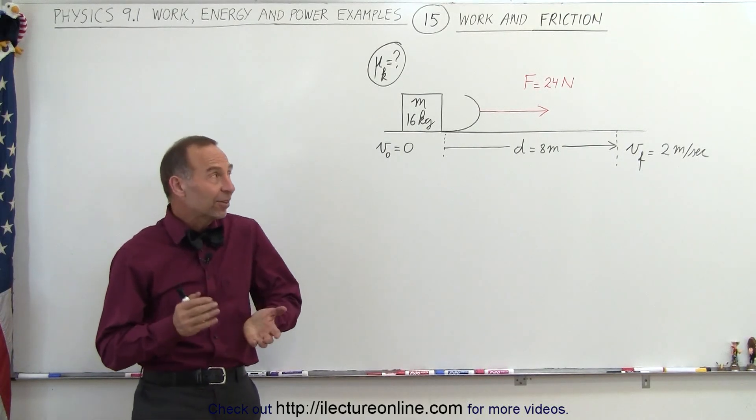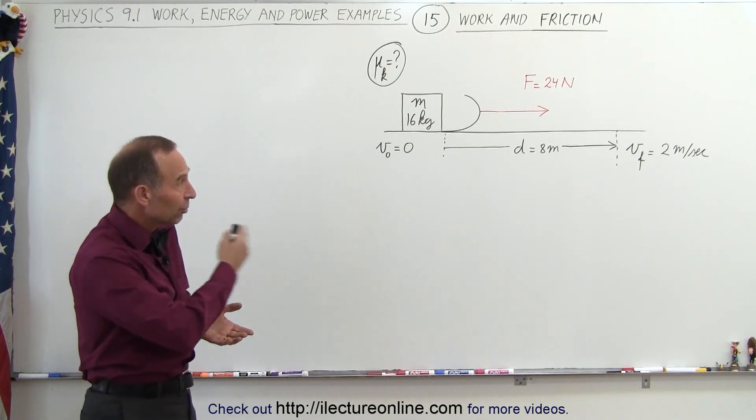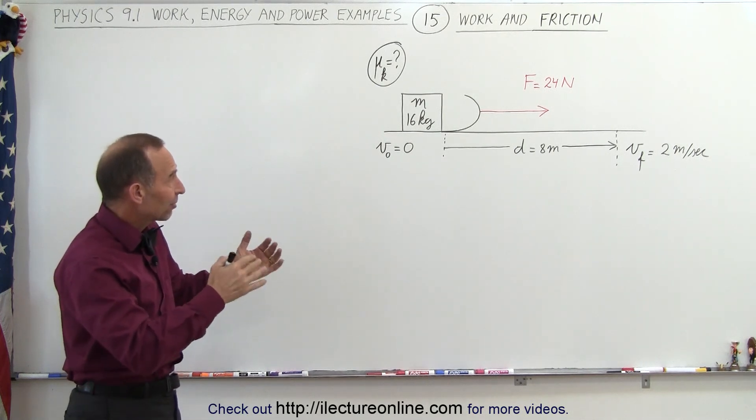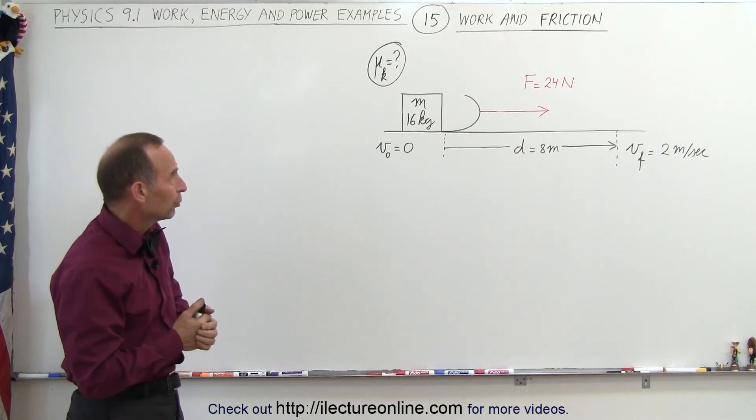Welcome to Electron Line. In this example we're pulling a sled across presumably the snow and it has a mass of 16 kilograms.